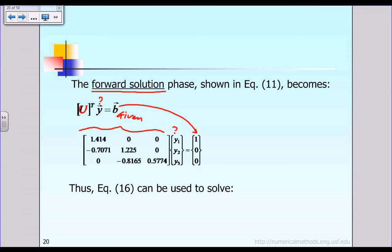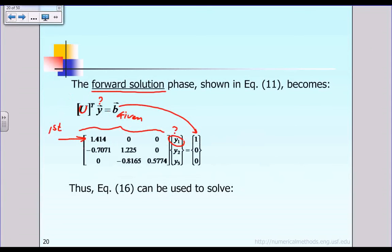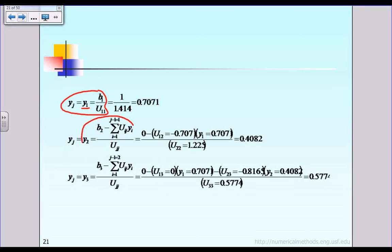From this matrix equation, we look at the first equation first, from which we can easily solve for the unknown Y1, as shown in the next slide. Then we go to the second equation, from which we solve for Y2. After expanding and substituting numerical values, Y2 equals 0.4082.